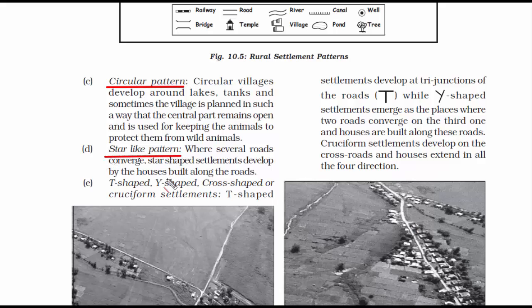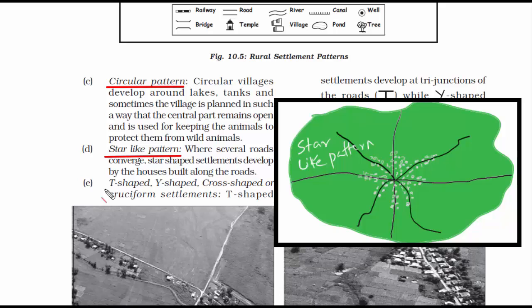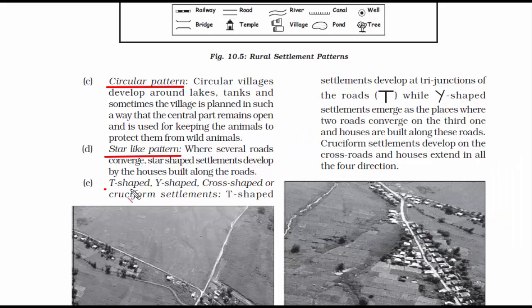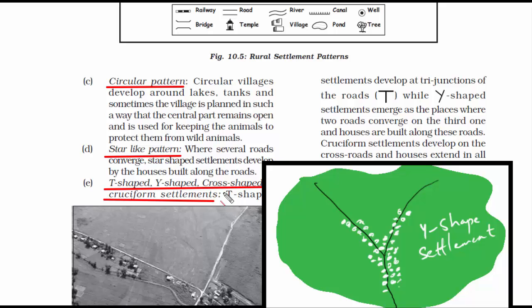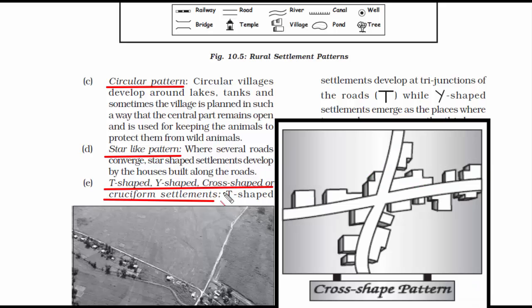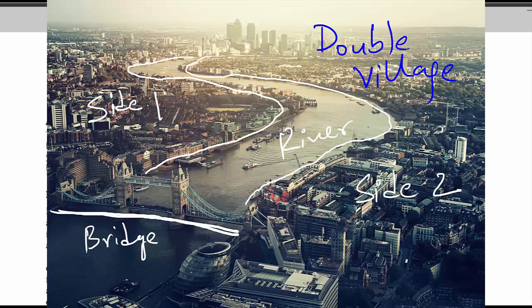The fourth is the star-like pattern, where several roads from different directions converge and houses are constructed along all roads. This is common in both villages and towns. The fifth is the T-shaped, Y-shaped, cross-shaped, or cruciform settlement. T-shaped settlements appear near a tri-junction, Y-shaped when two roads converge into one, and cross-shaped near a crossroad where roads extend in four directions with houses along them. The last is the double village, where settlement is on both sides of a river connected through a bridge, ferry, or small boat.